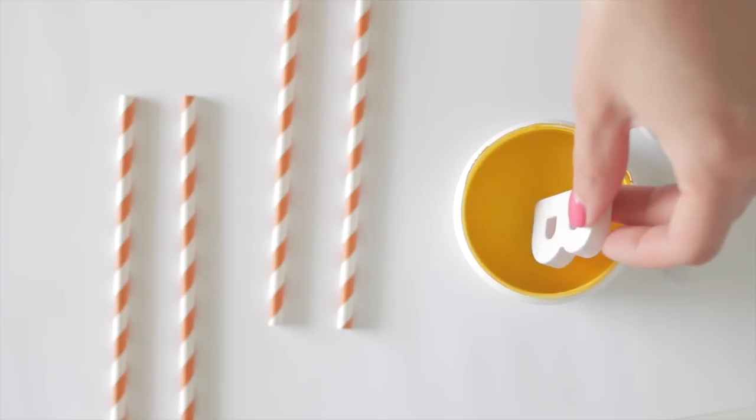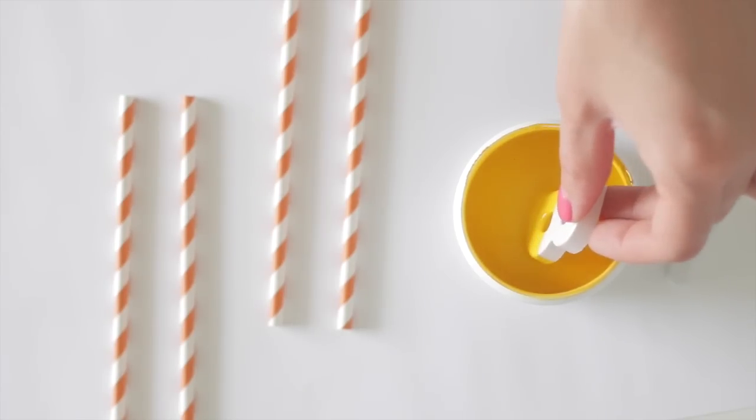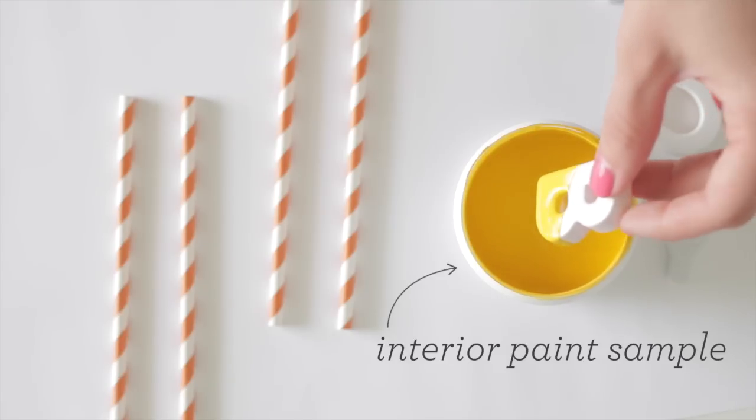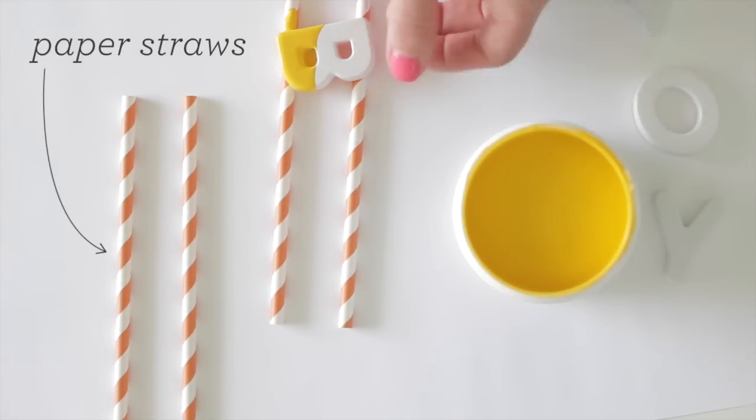Allow the spray paint to dry completely then dip each letter in a jar of paint. Interior paint samples are perfect for this. Shake off the excess and place the paint dipped magnet on taped down paper straws or popsicle sticks to dry.